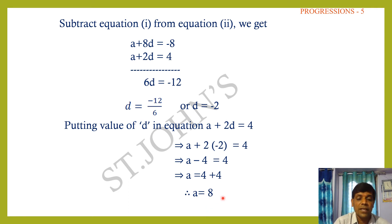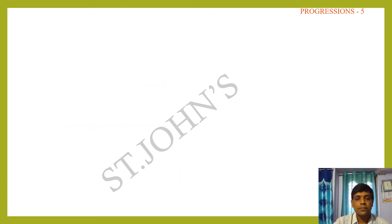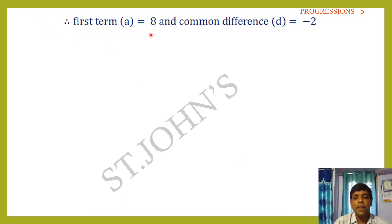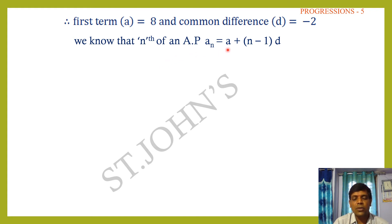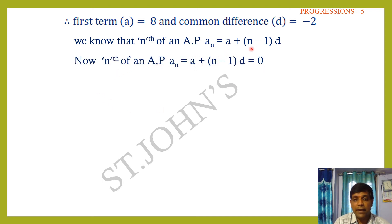Now find which term is 0. Let nth term = 0. Nth term of AP: aₙ = a + (n−1)d = 0. Substituting a = 8 and d = −2: 8 + (n−1)(−2) = 0, which gives 8 − 2n + 2 = 0.